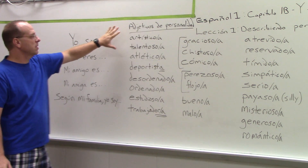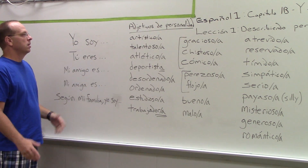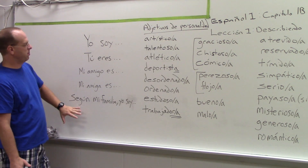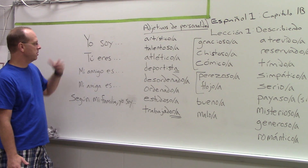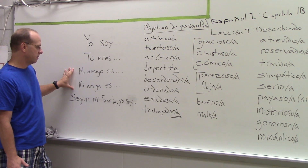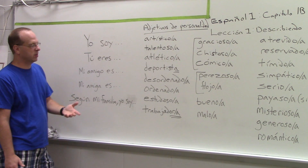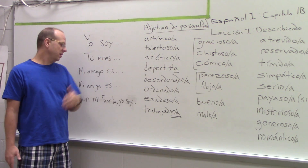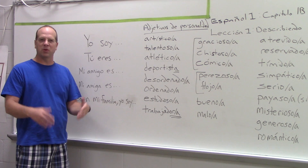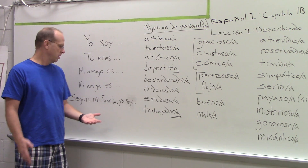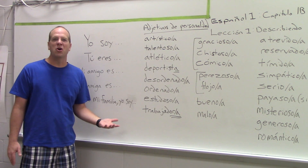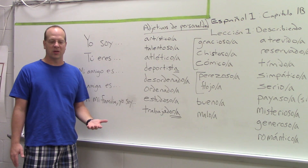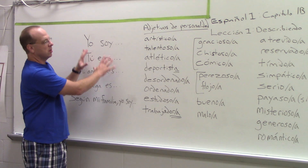Here we have adjetivos de personalidad. Adjetivos — they're adjectives, so they're describing people. For example: I am, you are, my friend is. According to my family, I am — because my opinion of myself, yo soy artístico, could be different than my family's opinion of me. Remember my beautiful artwork from the body parts? Según mi familia, yo no soy artístico. Yo no soy talentoso en el arte. Very sad.